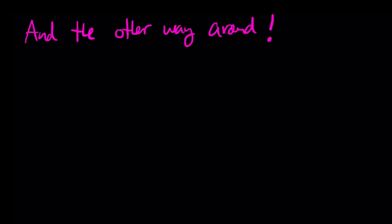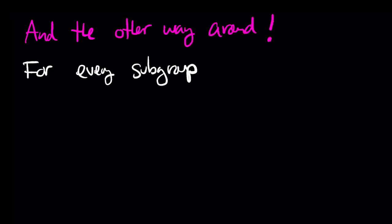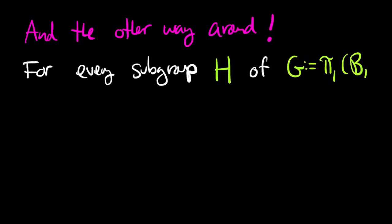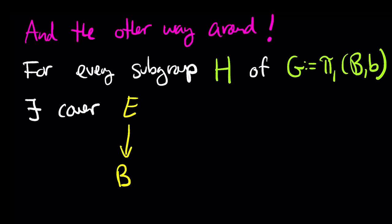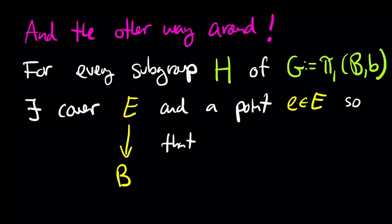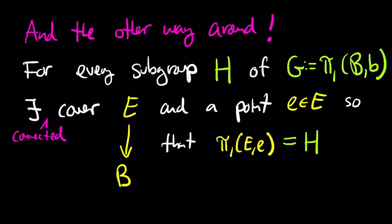Conversely, for any subgroup of the fundamental group of the base space, there exists a cover E and a point little e in the fiber over the base point little b such that the fundamental group of E at little e equals that subgroup. This cover is connected and unique up to isomorphism.